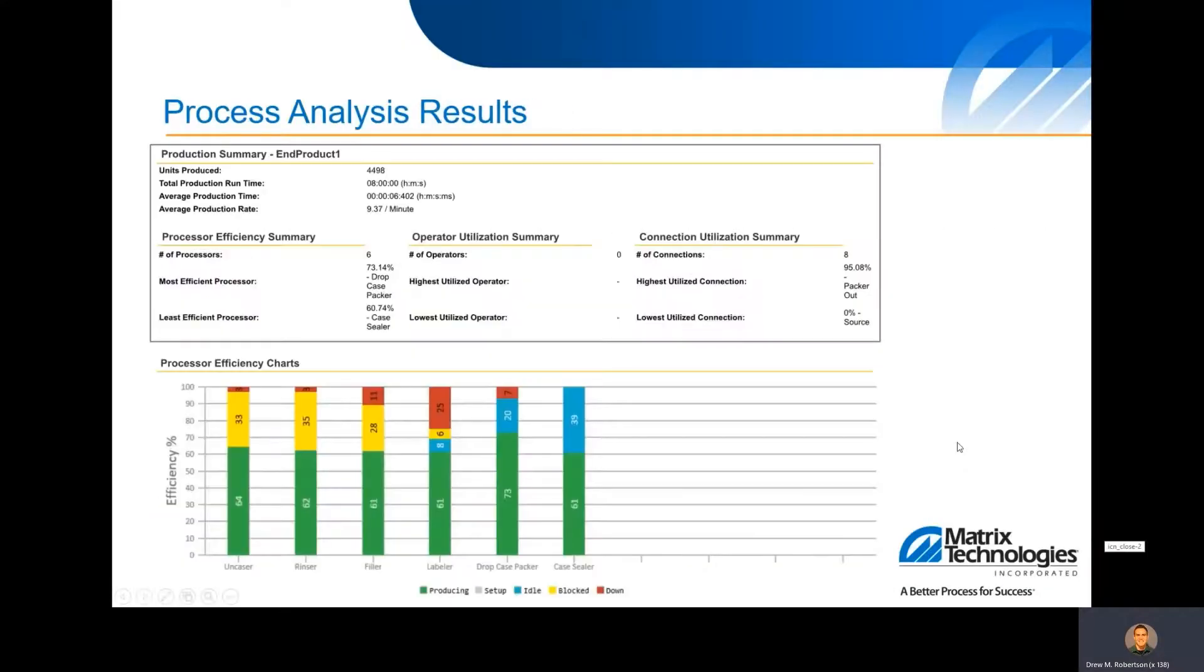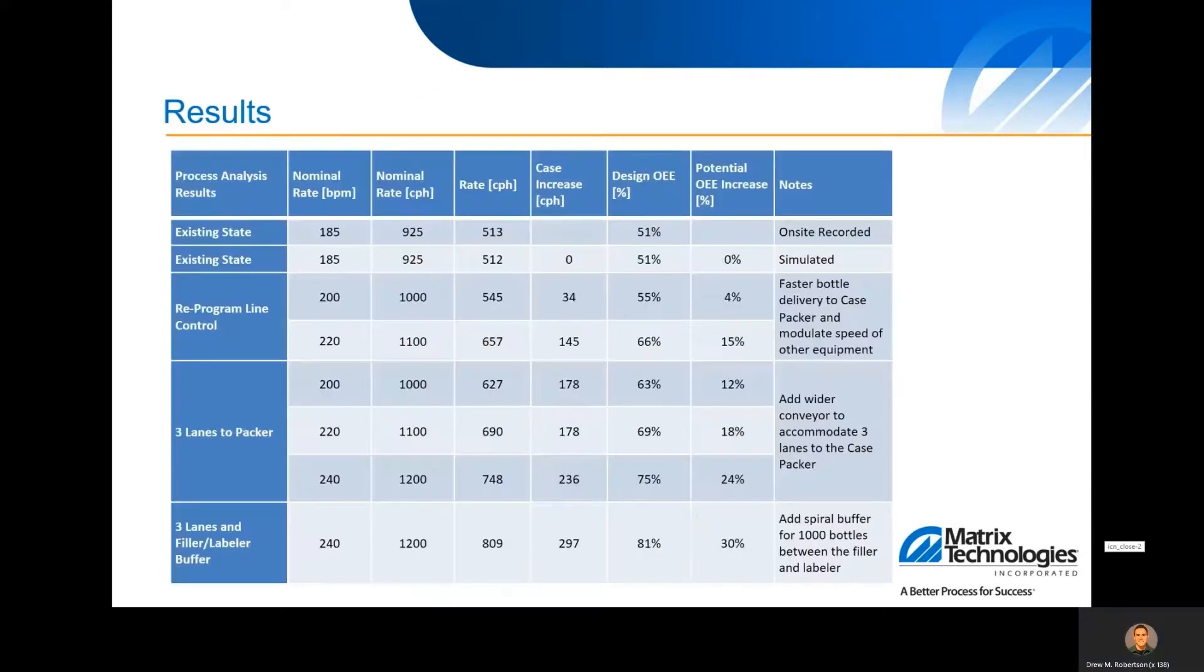So after each one of those tests, we get a nice results printout that talks about the units produced during that test over that time period and then the average production rate. You also get a nice little graphic that shows the downtime for each piece of equipment and the block time and the idle time. Ideally, we're trying to reduce or eliminate the idle and block time by adding buffers, running conveyors faster and ramping up that equipment speed to keep bottles moving through the entire line.